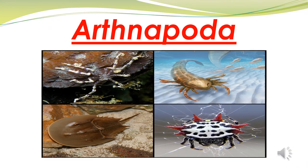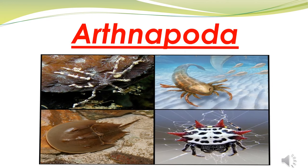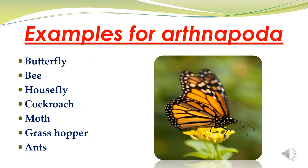Our last subtopic of the invertebrate animal groups is arthropoda. You can see some pictures of arthropodas in the middle of the screen. Examples for arthropoda are butterfly, bee, housefly, cockroach, moth, grasshopper, and ants. You can see a picture of a butterfly in the left corner of the screen.